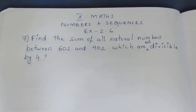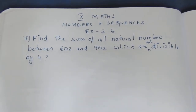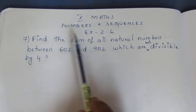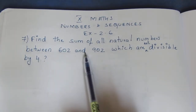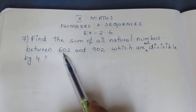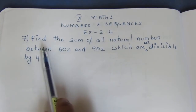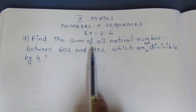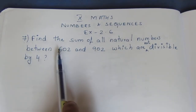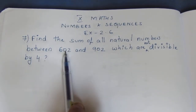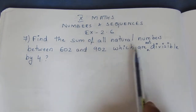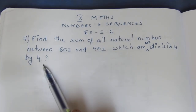Hello viewers, I am Ithli. In today's 10th maths, numbers and sequences, exercise 2.6, let's look at the 7th sum. Find the sum of all natural numbers between 602 and 902 which are not divisible by 4. The word 'between' means we exclude 602 and 902 themselves.